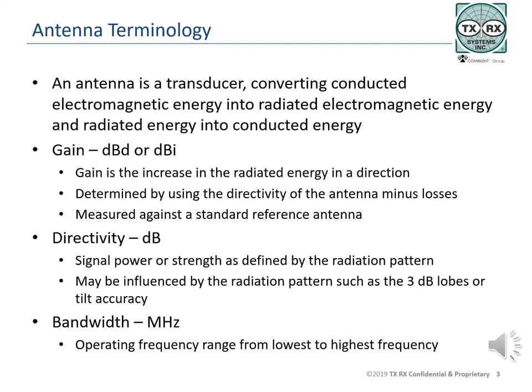Directivity is similar to gain, but is a measure of the concentration of the radiated field minus any losses in the antenna, as seen in the radiation pattern from the antenna. Directivity may be influenced by other factors, including the 3 dB lobes and tilt accuracy. Directivity is actually the term that should be used when describing additional signal in a given direction, but most engineers just refer to it as gain.